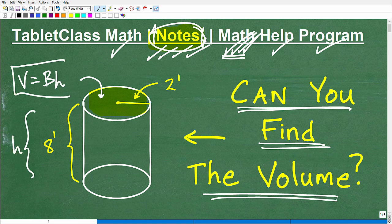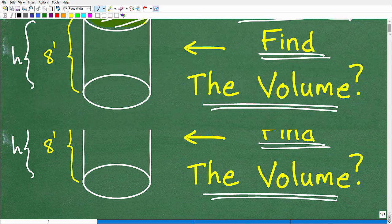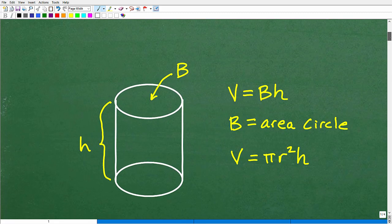So we'll call that the base times the height. So if you can do this, if you can find the area of a circle multiplied by the height, you will get the volume. So if you think you can do that, go ahead and do that now. But let's get into the formula for the volume of a cylinder specifically.